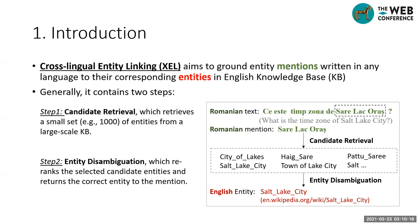First, I will briefly introduce the task of cross-lingual entity linking. This task aims to ground a mention in a source language with its entity in an English knowledge base. Generally, this task contains two steps. The first step is Candidate Retrieval, which retrieves a small set of candidate entities linked to the mention. The second step is entity disambiguation, which re-ranks the entities retrieved by the first step and returns the correct entity.